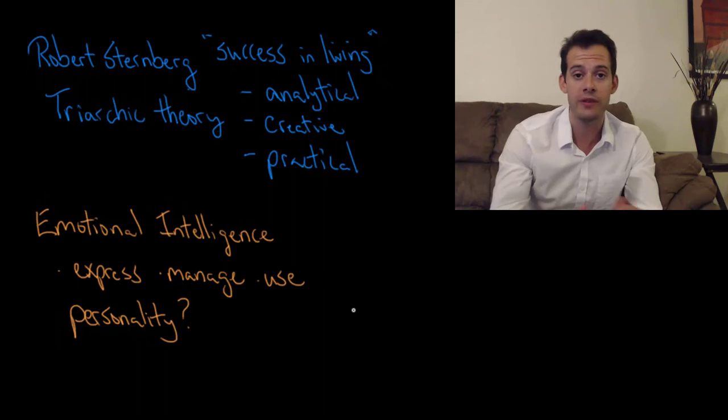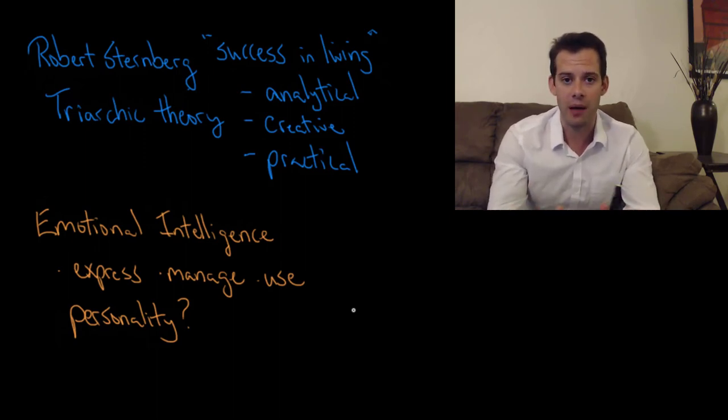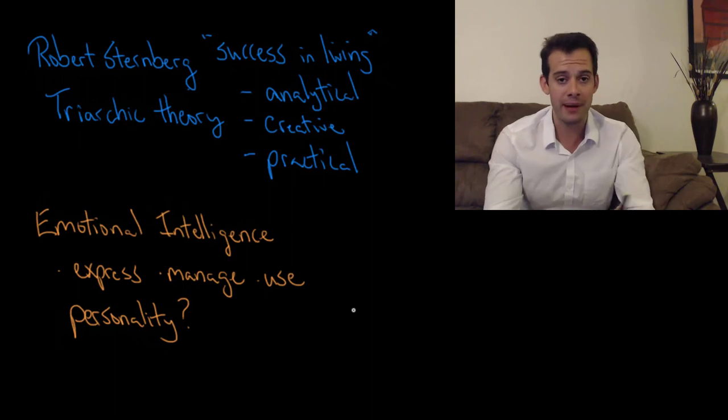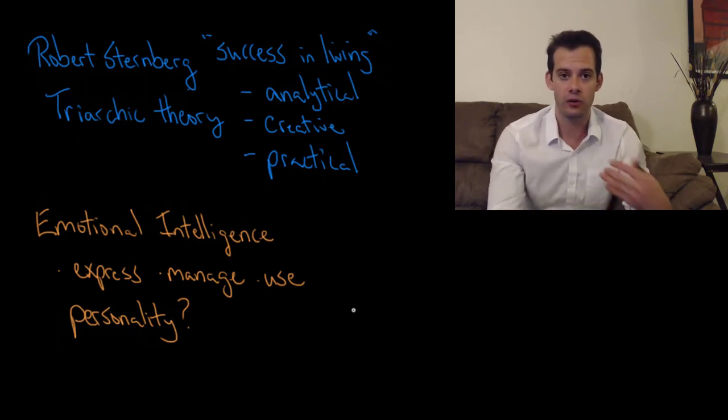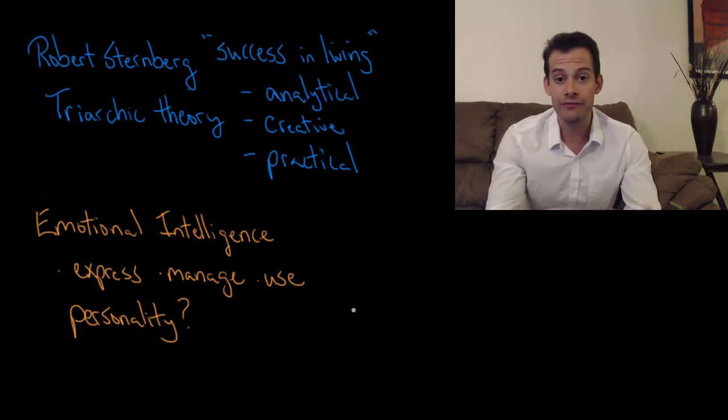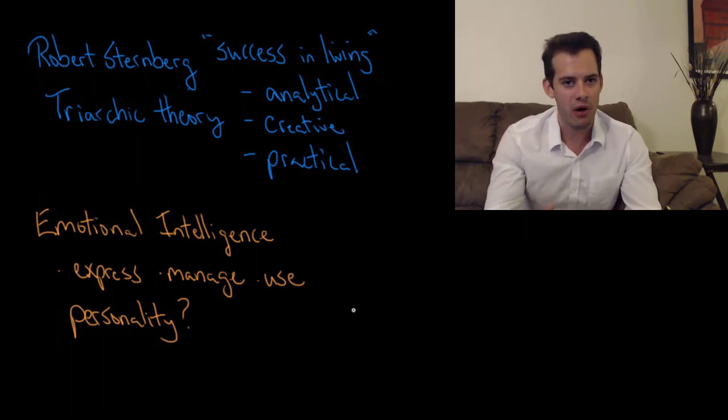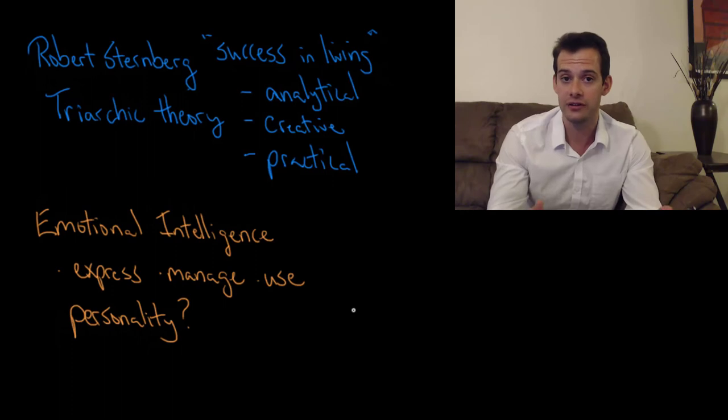One trait that people vary on is agreeableness. Some people prefer to cooperate with others and other people are more competitive. They differ in their agreeableness. That's going to cause differences in how they use their emotions when they're solving problems. Some people might be more willing to express anger to others because they're more competitive. Other people might try to mask their anger or hide it because they want to cooperate. They're more agreeable. That's going to have an influence on how they might solve particular problems in dealing with other people. But maybe we shouldn't consider that to be part of their intelligence. We might just say well their personality traits differ.